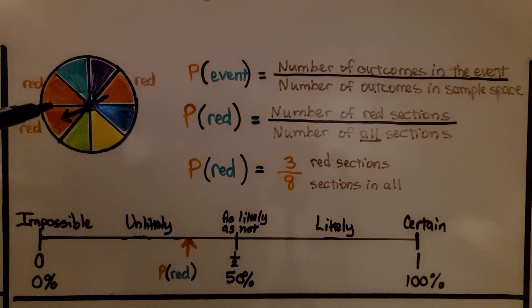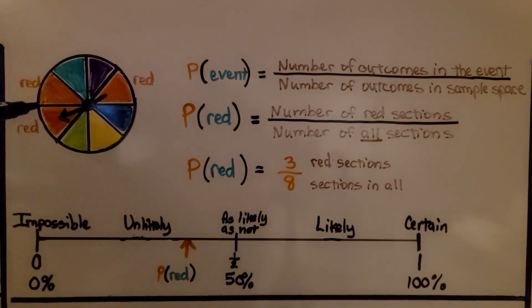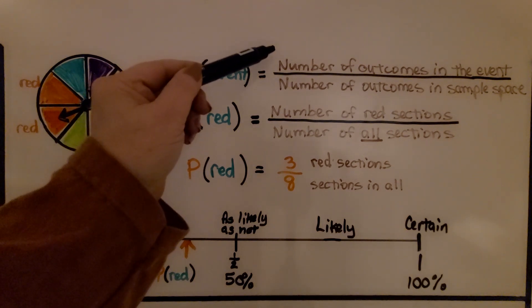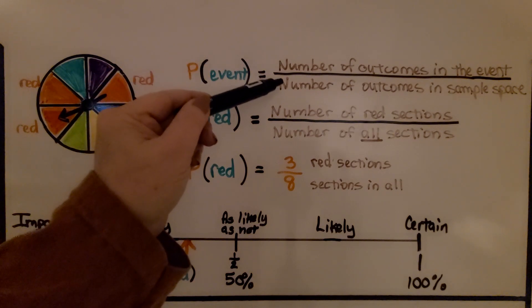So here we have a spinner, and it's got eight sections, but three sections are red. We have the probability of the event, which is the number of outcomes in the event over the number of outcomes in the sample space.